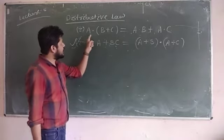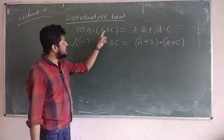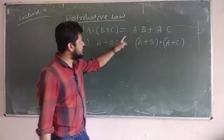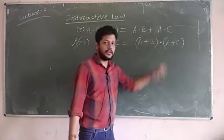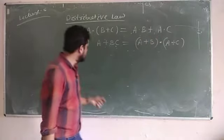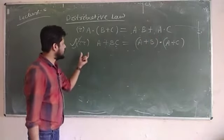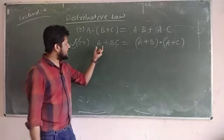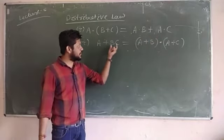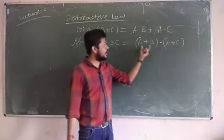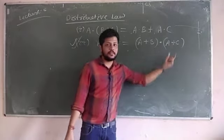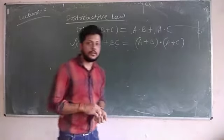The first distributive law states that A AND (B OR C) is equal to (A AND B) OR (A AND C). The second law is A OR (B AND C) which is equal to (A OR B) AND (A OR C).